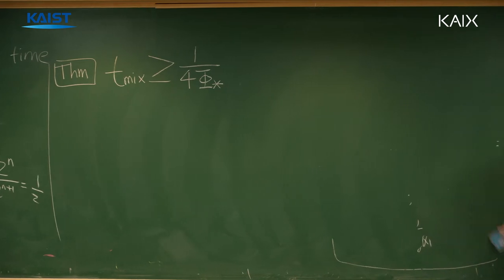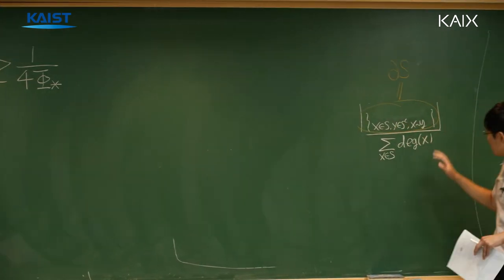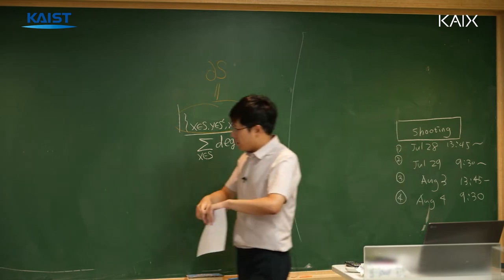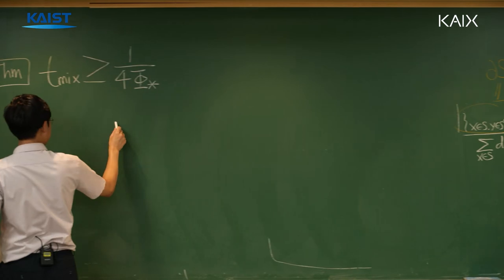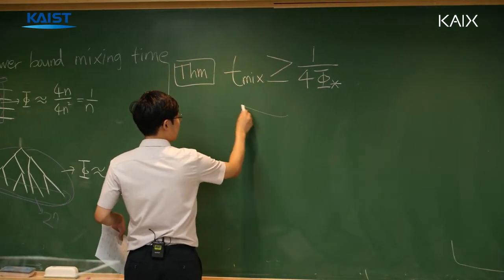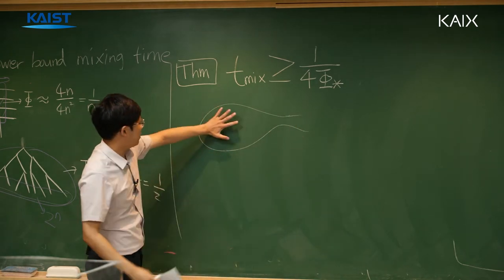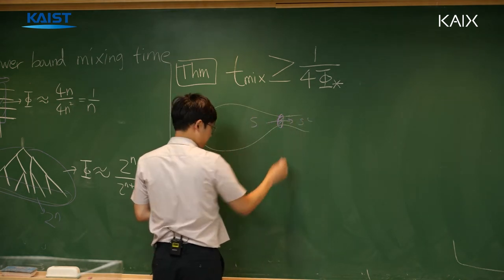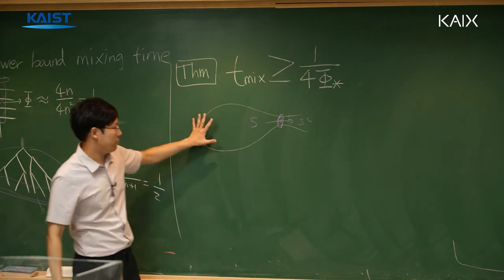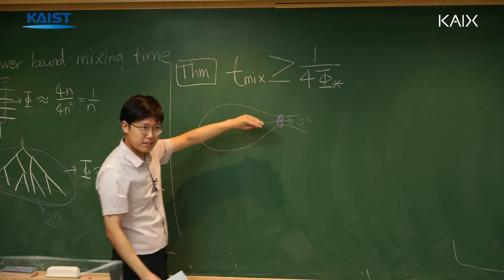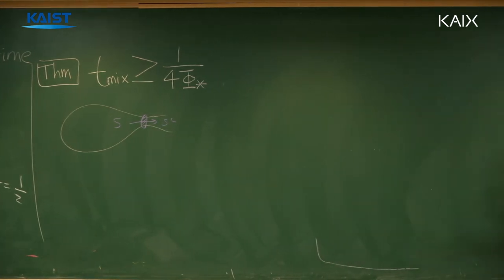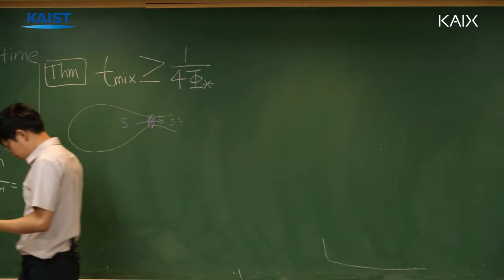This is intuitively true. If the isoperimetric constant is small, it means that compared to the volume, the boundary is very small. This boundary plays the role of a bottleneck — an obstruction for the Markov chain to get mixed. Because the boundary part is very small, it takes a longer time for the Markov chain to mix.